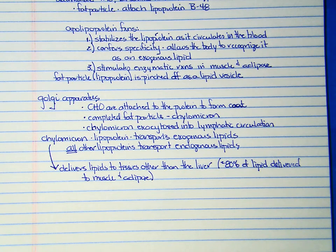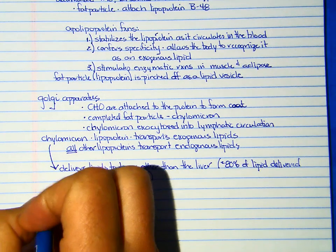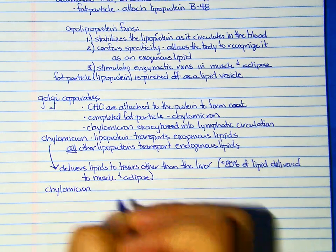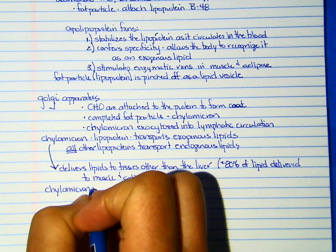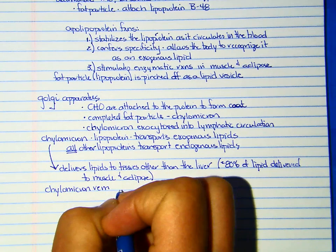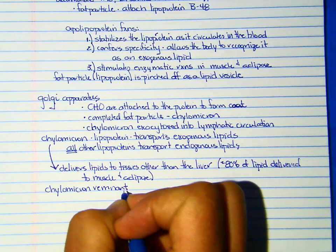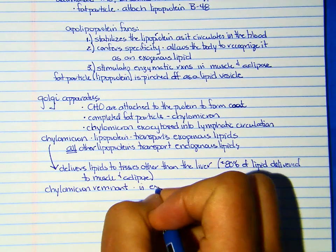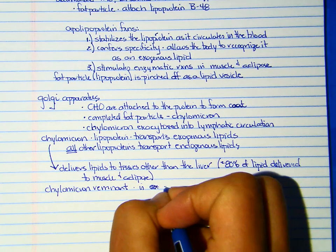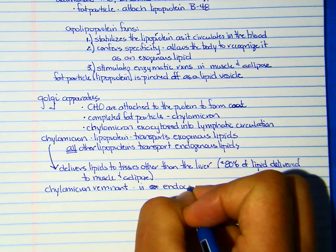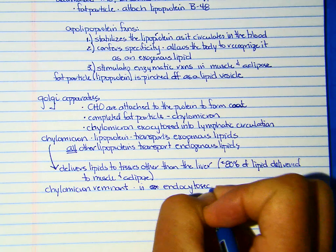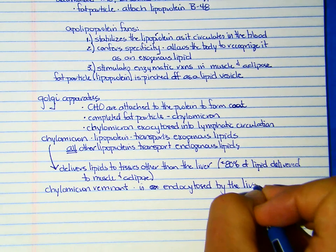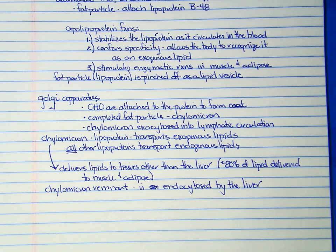We're going to talk about it in a second, but there's this other lipoprotein called a chylomicron remnant. And the chylomicron remnant is endocytosed by the liver. So the liver is going to remove the chylomicron remnant from the blood.